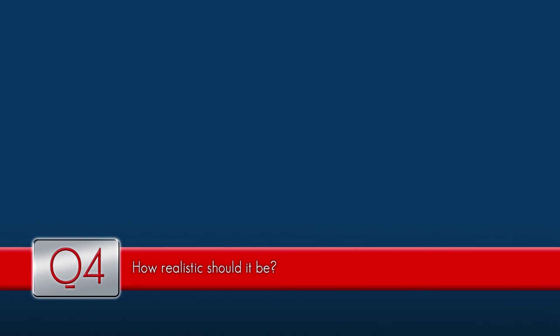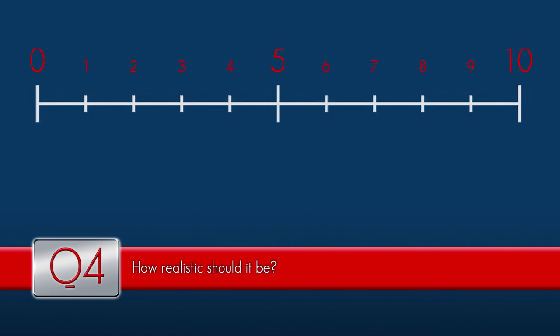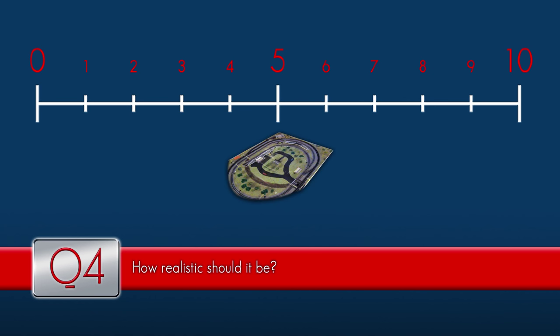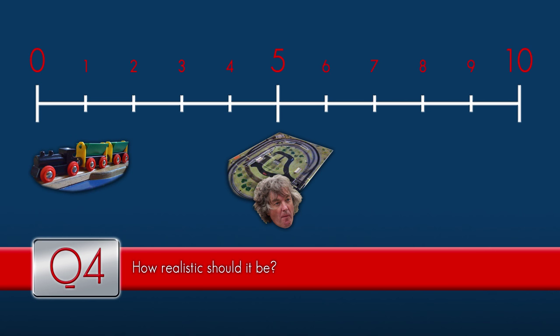To help answer how realistic to make the layout, I've come up with a scale. Each and every one of us falls onto this scale somewhere depending on how into the modeling you are. For some people it's just about running trains — ballast, scenery, and even the fiddle yard aren't really important. At a five you'd avoid something too toy-like, which is roughly where James May would fall. A wooden Brio or plastic train set would be at one or two, whilst an exhibition-standard layout using code 75 track, electrofrog points, and scratch-built buildings would probably be a ten.